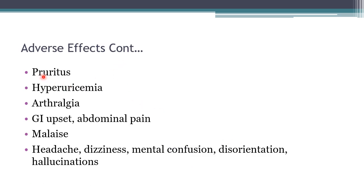Ethambutol can also produce pruritus, hyperuricemia — because it decreases the excretion of uric acid — and resulting arthralgia, GI upset, abdominal pain, malaise, headache, dizziness, mental confusion, disorientation, and hallucinations when it crosses the blood-brain barrier. But the most important adverse effect remains decreased visual acuity and impaired red-green color discrimination.